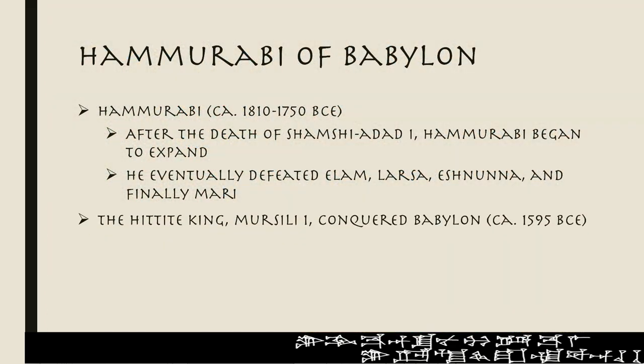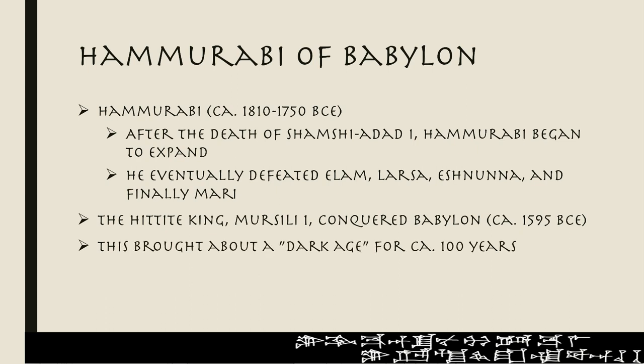Around 1600, the Hittite king Mursili the First comes down and conquers Babylon. This brings an end to the first dynasty of Babylon and brings on a dark age of approximately 100 years.